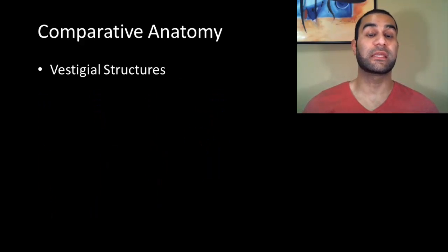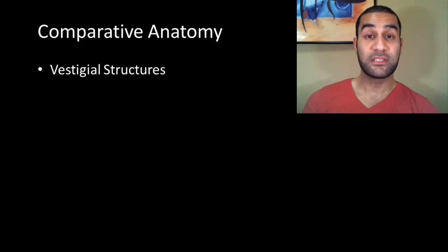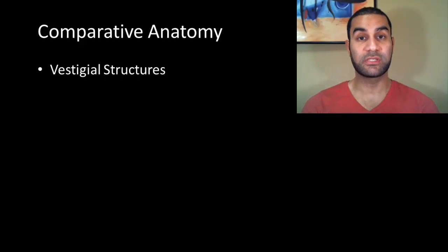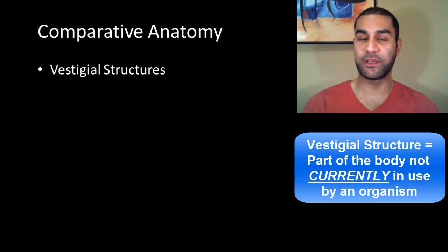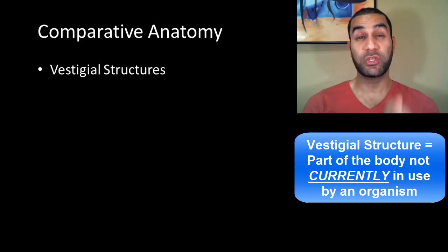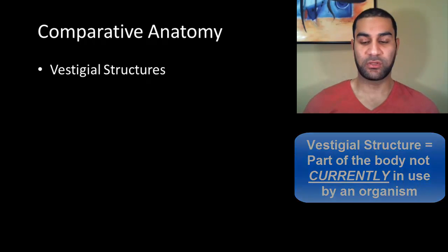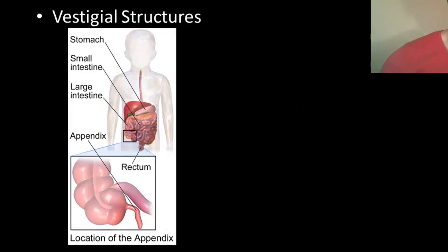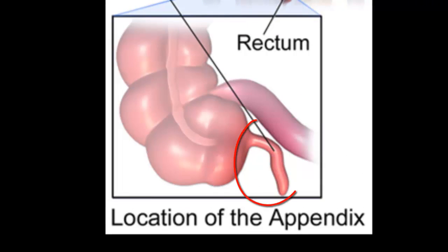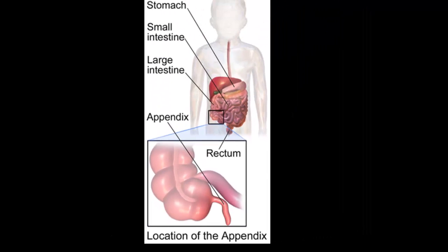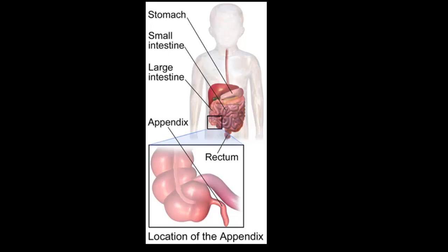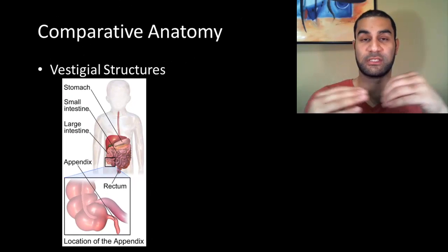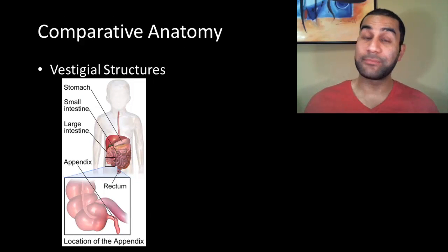Another way of looking at comparative anatomy is thinking about something called vestigial structure. A vestigial structure is a part of the body that is not currently in use by the organism. Currently is a very important word — a part of the body that has no current use or current function is what we consider a vestigial structure. One very common example is something found on your large intestine, a little tiny flap of tissue called the appendix, found at the bottom of your ascending colon, where the small intestine and the large intestine meet. It does absolutely nothing for us.